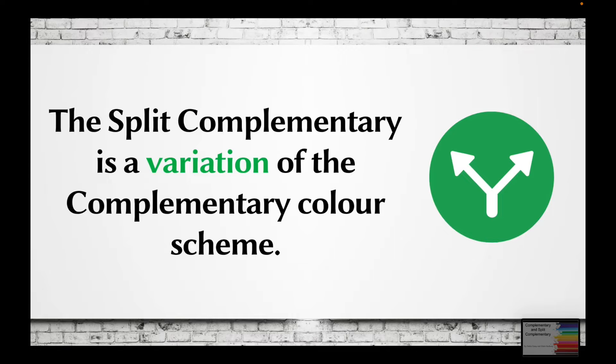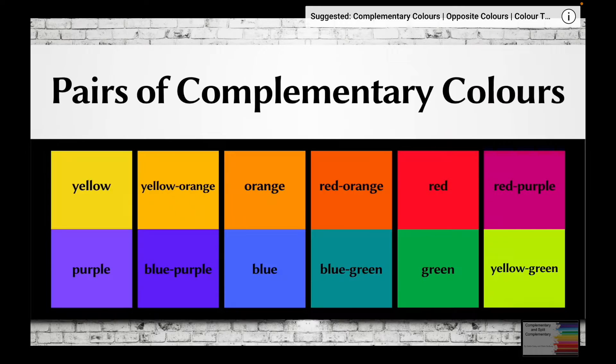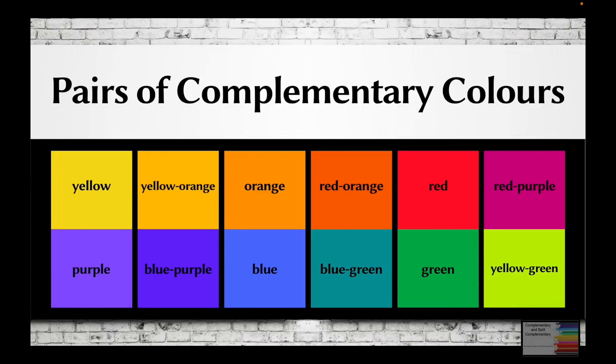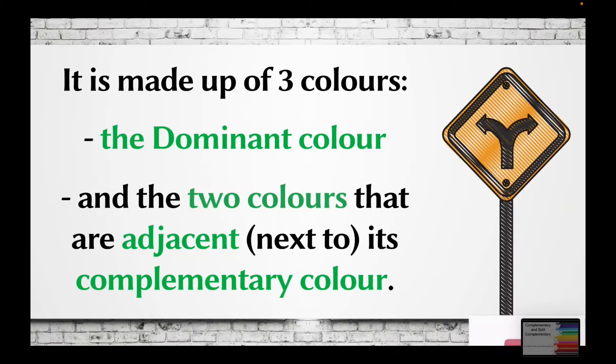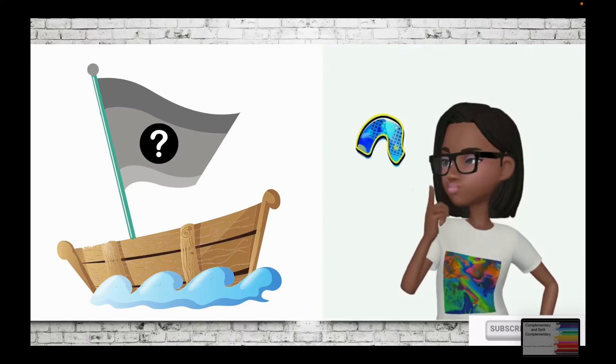What are split complementary colors? A split complementary is a variation of the complementary color scheme. Unlike the complementary color scheme, which is only made up of two colors, a split complementary is made up of three colors: the dominant color and two colors that are adjacent or next to its complementary color.